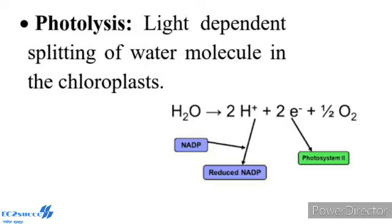Photolysis: The light-dependent splitting of water molecules in the chloroplast. Robert Hill was the first to formulate the light-driven reaction of photosynthesis, referred to as the electron transport chain. The electron transport chain is initiated by absorption of light by Photosystem II. P680 becomes excited by absorbing light and its electrons are transferred to an electron acceptor molecule. As a result, P680 becomes a strong oxidizing agent and splits water molecules to release oxygen. This is called photolysis or photocatalytic splitting of water. It requires manganese, calcium and chloride ions.